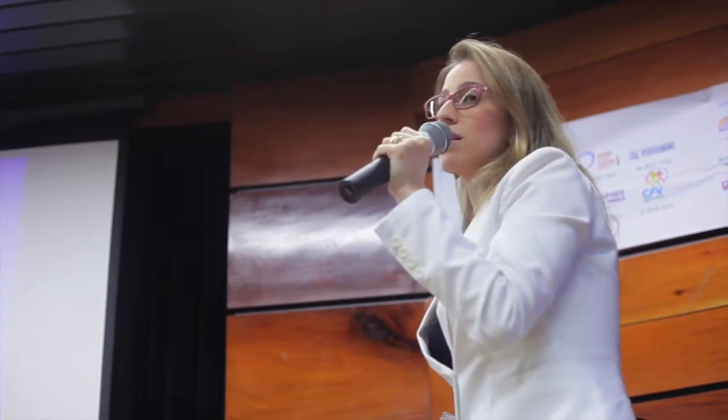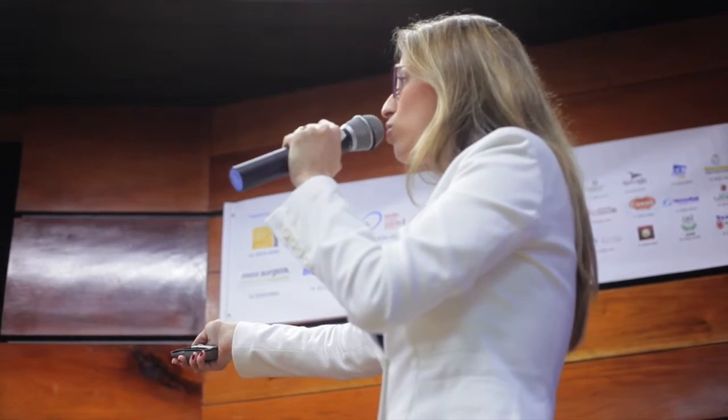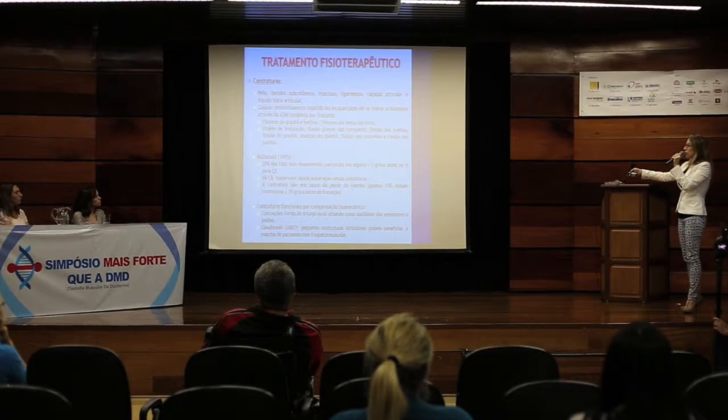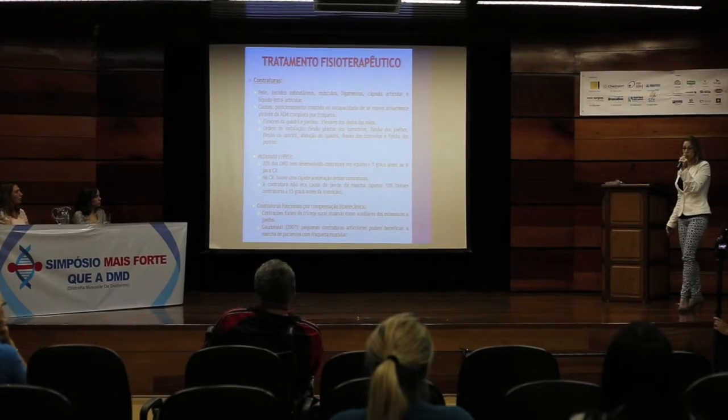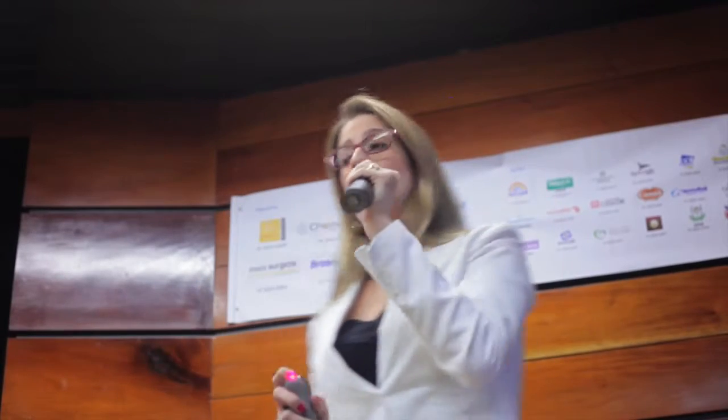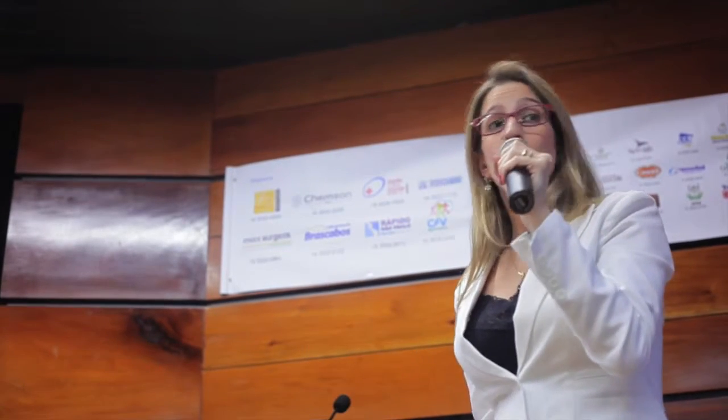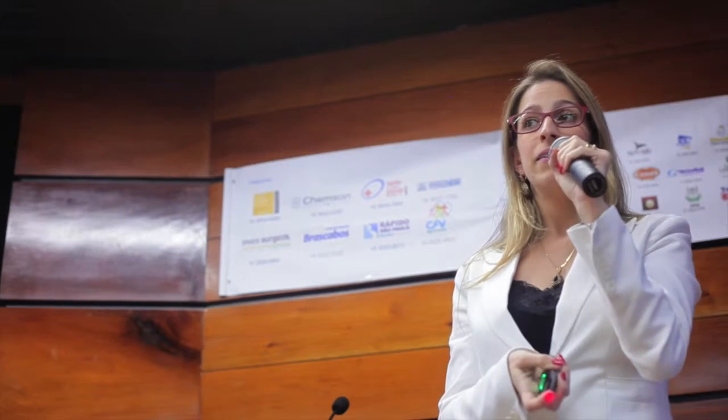As contraturas: a literatura fala que as de membros inferiores estão bem elucidadas. A ordem de instalação das contraturas são flexores plantares do tornozelo, flexores de joelho, flexor de quadril, abdução de quadril, depois flexor de cotovelo e flexores dos punhos. Na prática, a gente vê que muitas vezes as crianças quando chegam com 5, 6, 7 anos já começam a ter contraturas de flexores de dedos, bem antes de contraturas de abdução de quadril. Não está muito bem elucidado, porque a gente olha muito pouco para o membro superior — o fisioterapeuta olha muito para o membro inferior e esquece o membro superior.